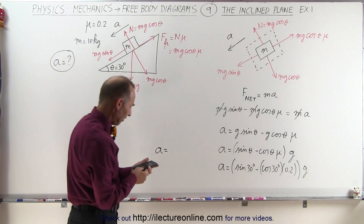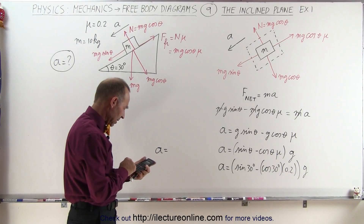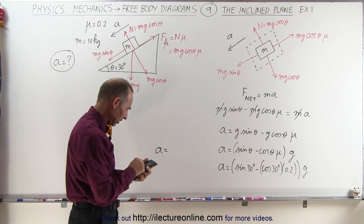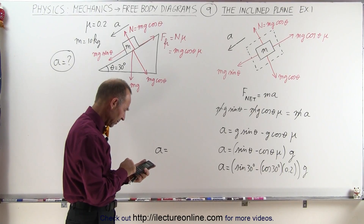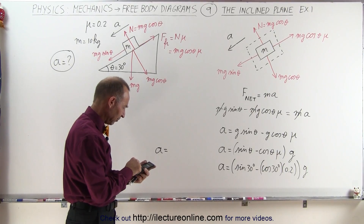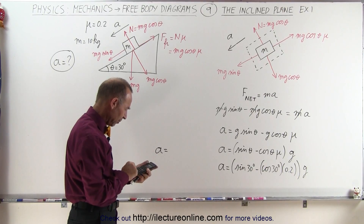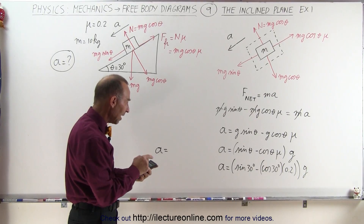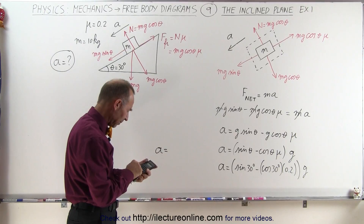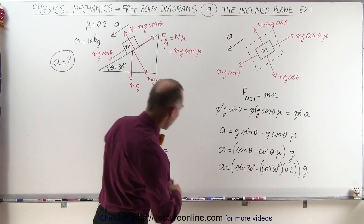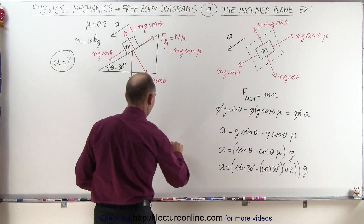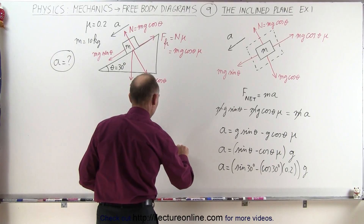We take the cosine of 30 times 0.2, subtract that from sine of 30, which gives approximately 0.357, then multiply by 9.8, giving an acceleration of 3.2 meters per second squared.